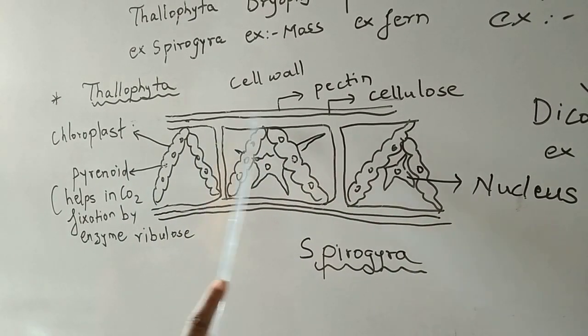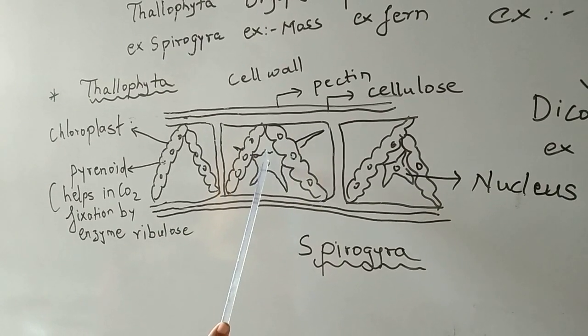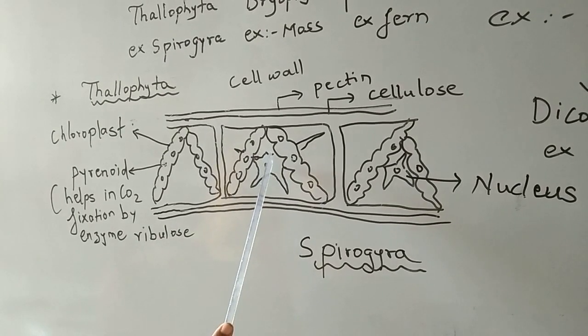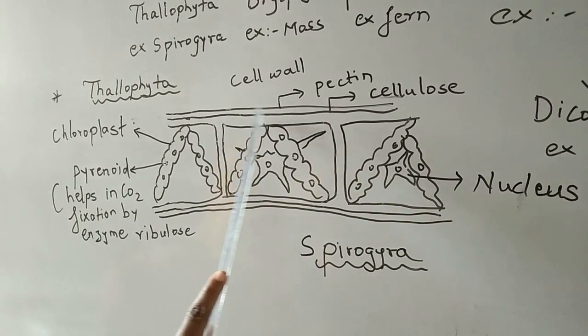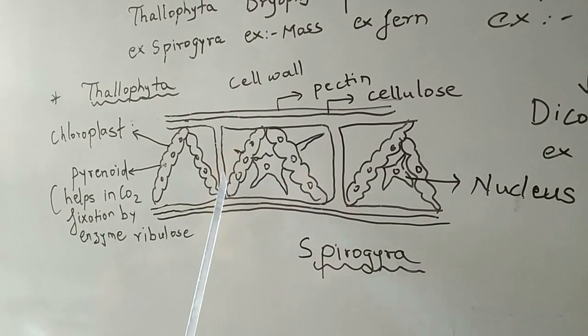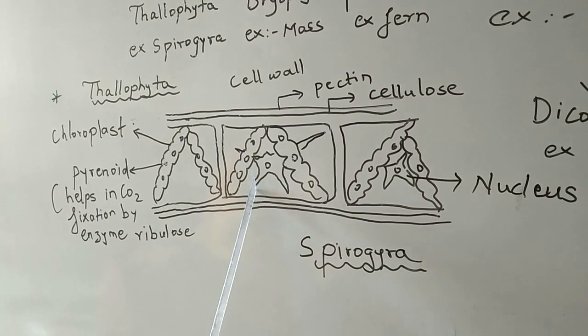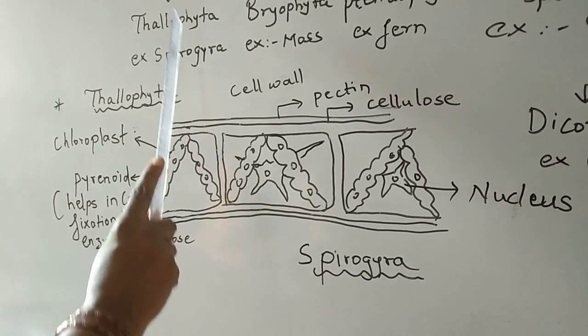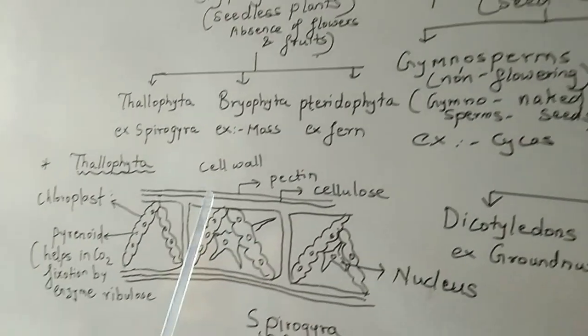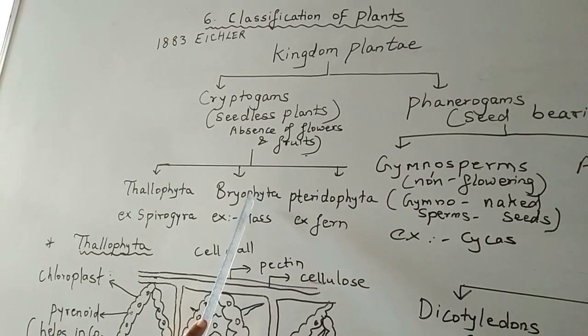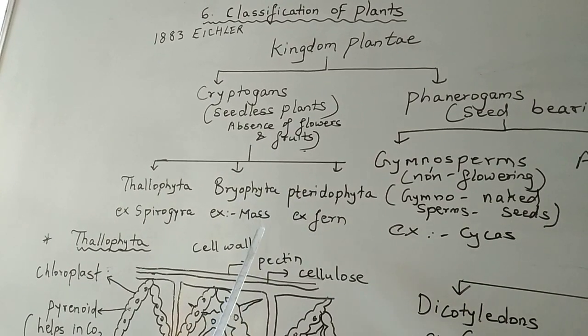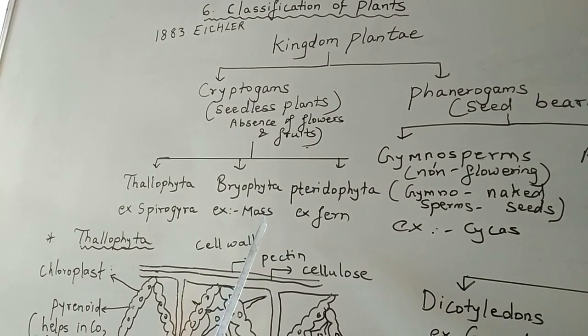Inside the cytoplasm, there is one more organelle called the nucleus. The role of nucleus is to control the activity of the cell. In this way, today we have studied about division thallophyta. The next divisions of bryophyta and pteridophyta we are going to see in my next video. Hope you have understood. Thank you very much.